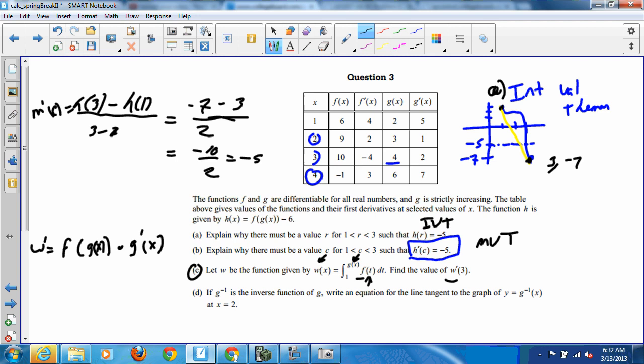Alright. So they're specifically asking us, well what is it at 3? So we have f of g of 3 times g prime at 3. And we know that g prime at 3 is equal to 2. And g at 3 is equal to 4. So we need a function value of f at 4 times that 2. So f at 4 is equal to negative 1. So we have negative 1 times 2. And that equals negative 2.